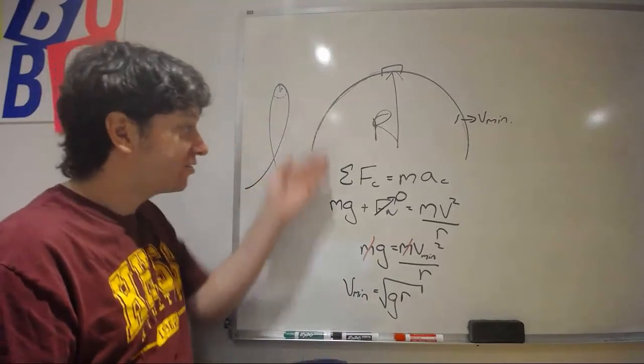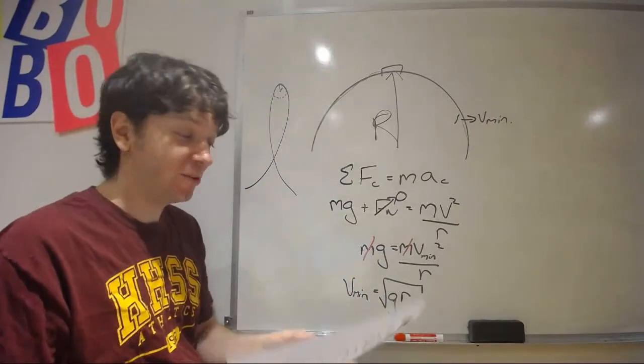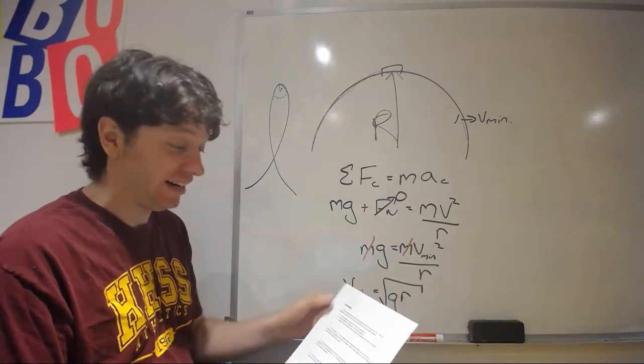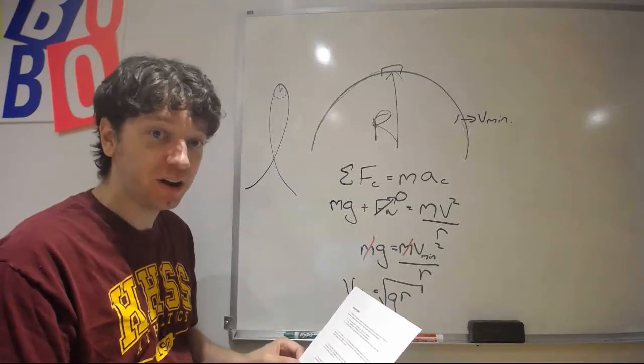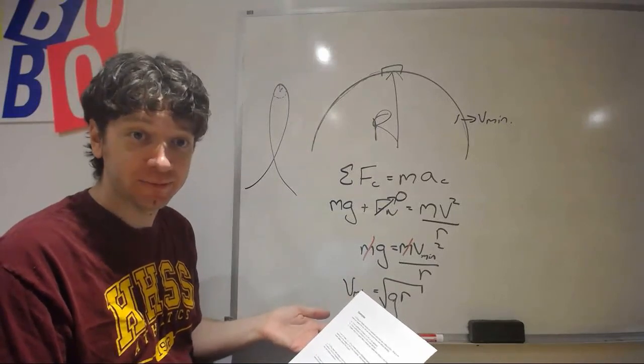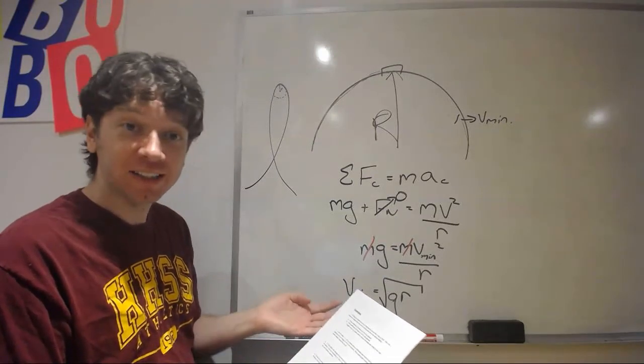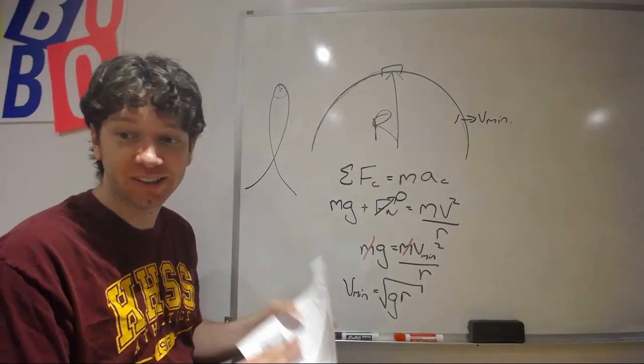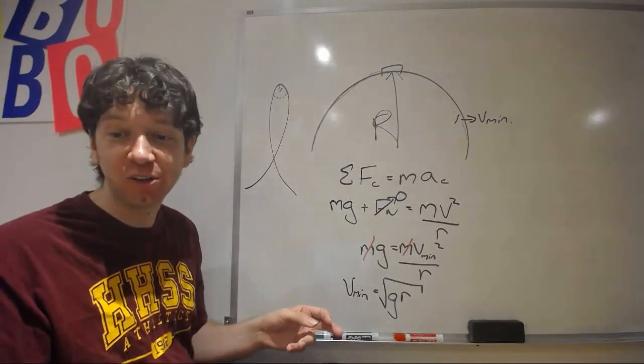Now, this strategy for solving problems is what we're going to use to solve the four problems on the back. I made another video where I actually go through each problem. It's a whiteboard animation video. Try it yourself first, and then watch the other video. And our next lesson will be the last lesson for this unit, and we're going to go over universal gravitation.